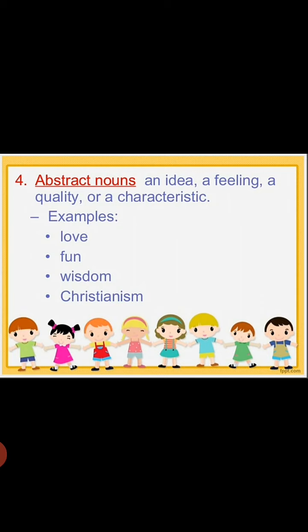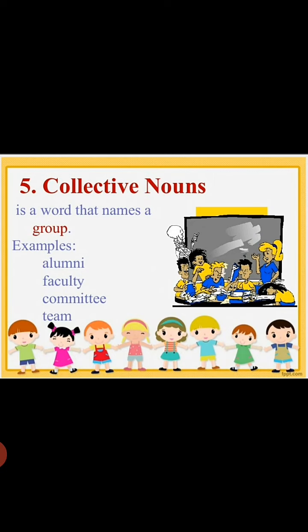Abstract noun is an idea, a feeling, a quality, or a characteristic. We express our feelings, ideas, qualities, and characteristics through abstract nouns. Examples include love, fun, wisdom, happiness, friendship, childhood, and imagination — there are many other words in this category.